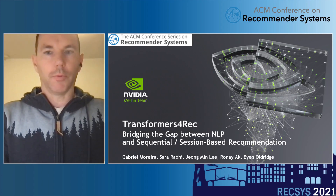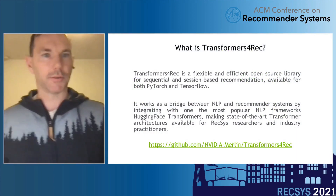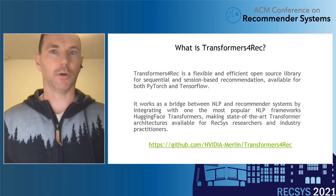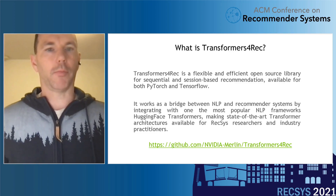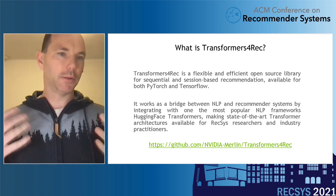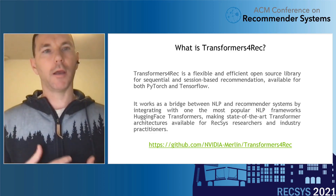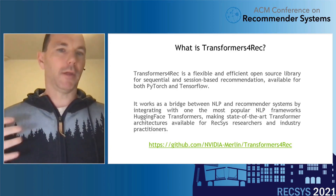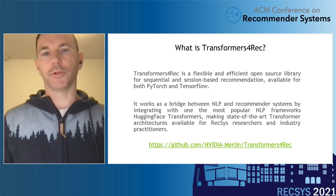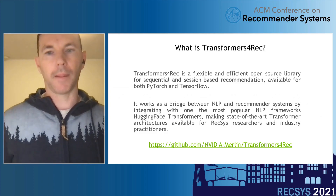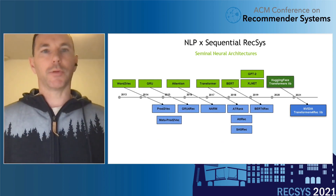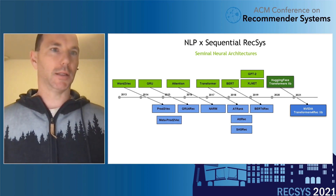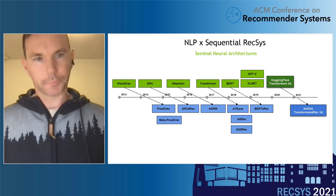Transformers for Rec is a flexible and efficient open-source library designed for sequential and session-based recommendation, available for both PyTorch and TensorFlow. It builds on top of the Hugging Face transformer library, with the goal of making state-of-the-art NLP research available to researchers in the RecSys community. Part of the motivation was looking at the history of recommendation following NLP's progression.